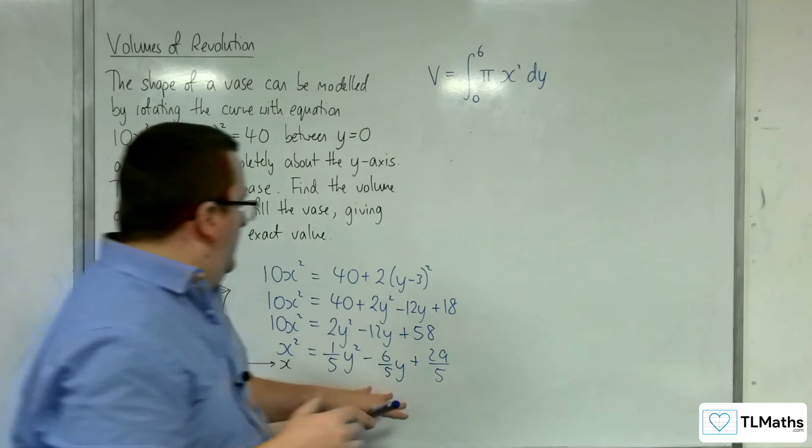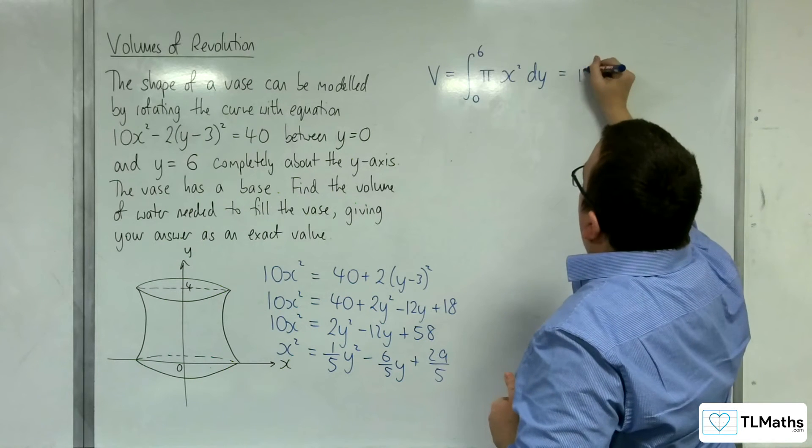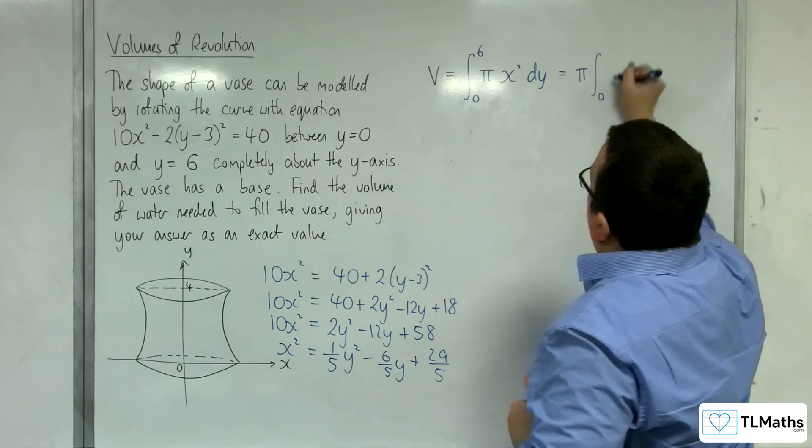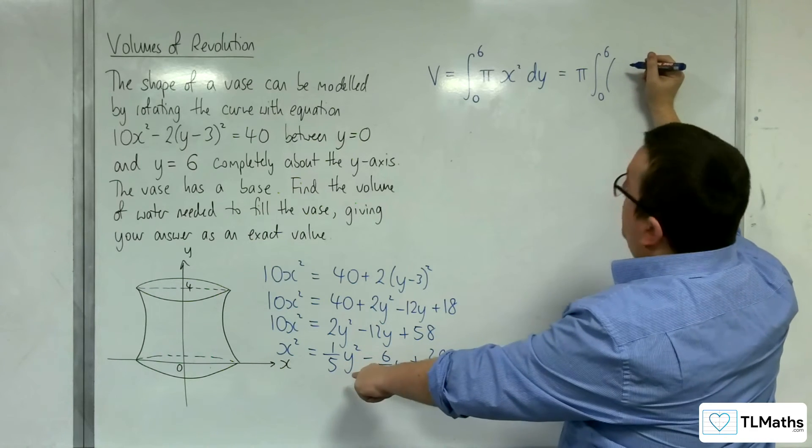So with that, I can now substitute that in to my integral. So I'm going to bring the π outside, integrated between 0 and 6. Well, I could actually bring the fifth out as well. So let's do that.